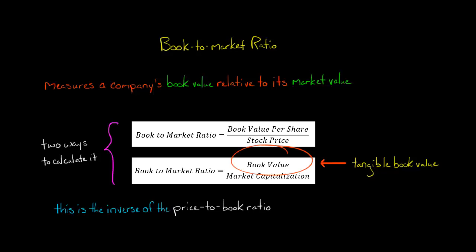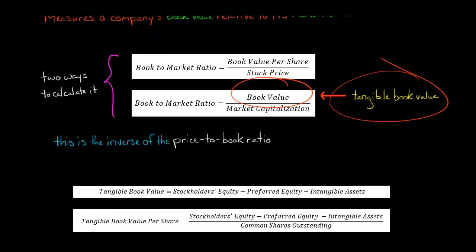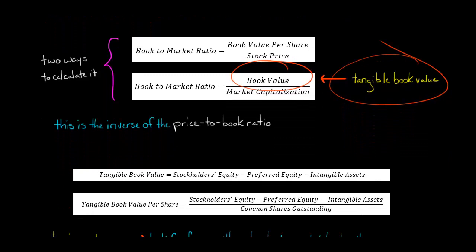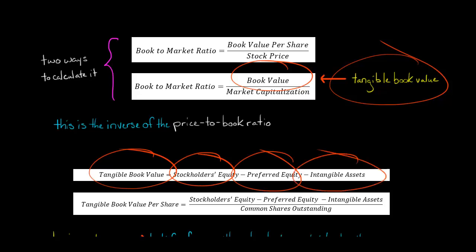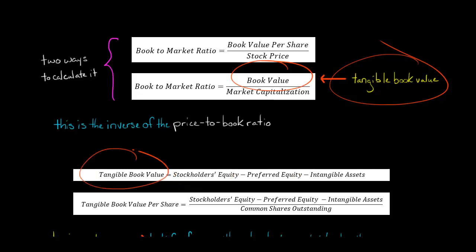What is the book value? Well, the book value is typically measured as the tangible book value. Tangible book value is the company's stockholders' equity minus any preferred equity minus intangible assets. It's the amount of money that the company's common shareholders would receive if the company sold all its tangible assets for their book values and then satisfied any liabilities, like paid off any debts. So that's what would be left for the common shareholders.